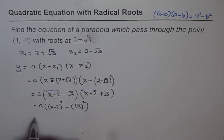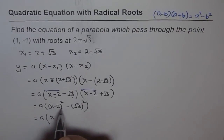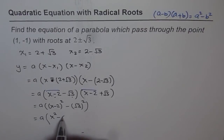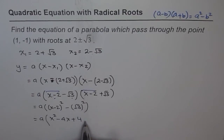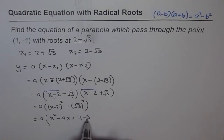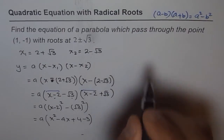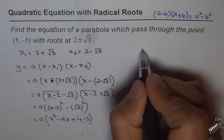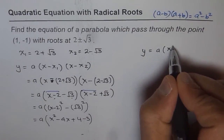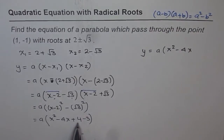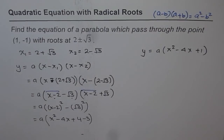Now expanding: (x minus 2) squared gives x squared minus 4x plus 4, and (square root 3) squared is 3. So the equation becomes y equals a times (x squared minus 4x plus 4 minus 3), which simplifies to y equals a times (x squared minus 4x plus 1). That is our quadratic equation.